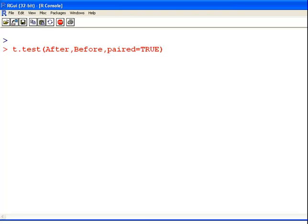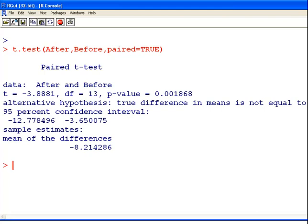Okay. So that's the important bit, paired equals TRUE. So t.test after, before, paired equals TRUE. So there we have there, paired t-test.